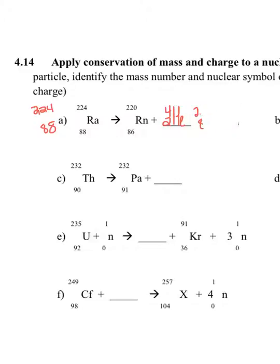So now, on the left-hand side, I have 224 and 88 as well. I didn't change anything there. But on the right-hand side, I have 220 plus 4 gives me 224, and 86 plus 2 gives me 88. So I now have a correctly balanced nuclear equation because my sum of my mass, my top number, and my sum of my atomic numbers are the same on both sides.